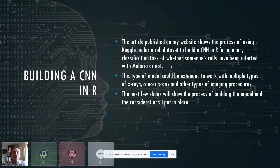Building a CNN in R, a convolutional neural network. This article will be published on my website as a tutorial on how I went about building this network, but it's based on a Kaggle malaria cell dataset. It looks at the presence of a parasite infection over an uninfected cell. It's essentially a binary classification task. This model could be extended to work with multiple types of x-rays, cancer scans, imaging detection to detect the presence of illness and disease.